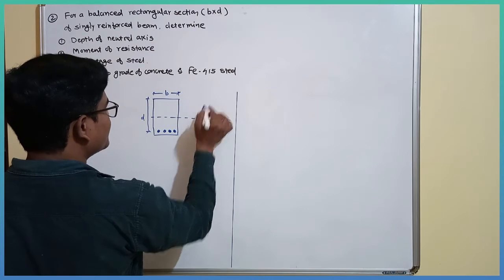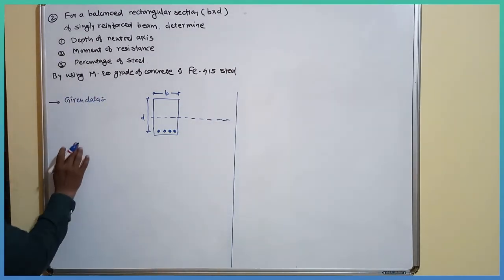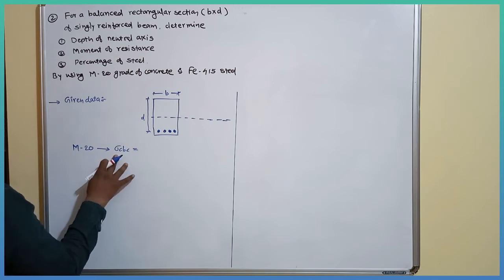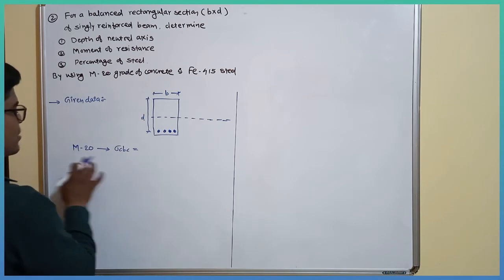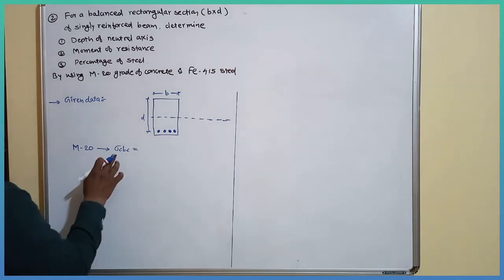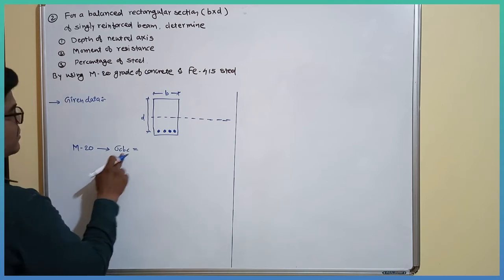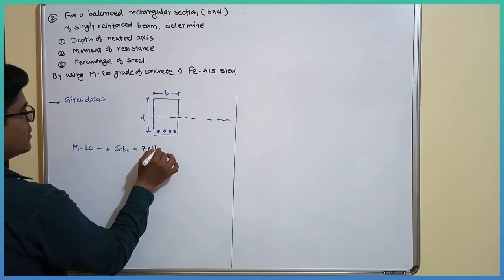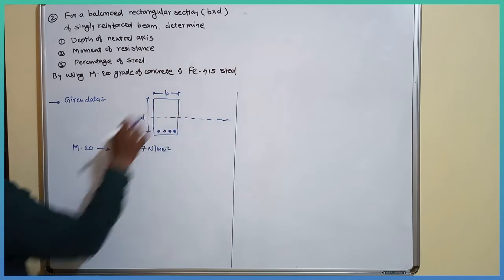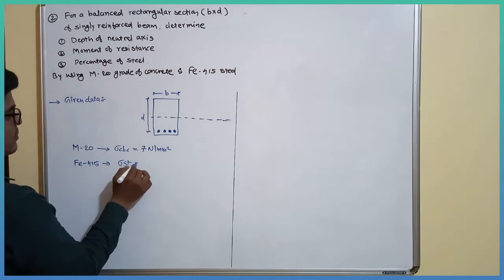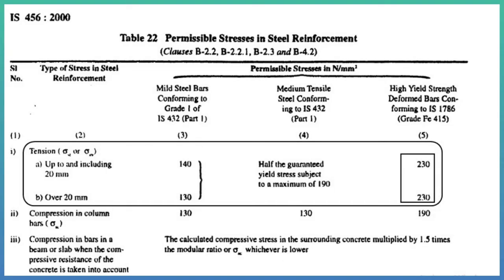They have given M20 grade of concrete. It means that σ_cbc, the permissible stress of concrete due to bending, is given in IS 456 on page number 81, table number 21. For M20 grade, σ_cbc is equal to 7 N/mm². Similarly, they have given Fe415 steel, so σ_st will be 230 N/mm².